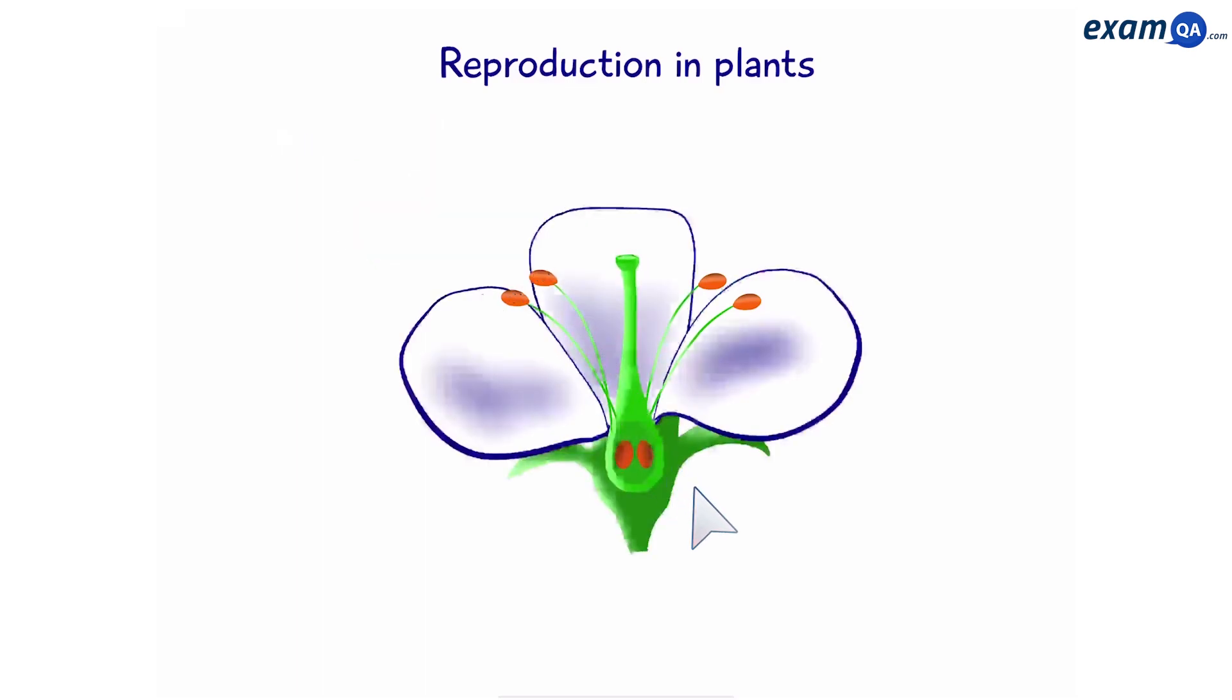Now that we know all the different parts of the plant, let's see how plants reproduce. The pollen from the anther lands on the stigma. This process is called pollination.